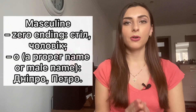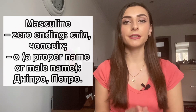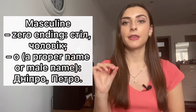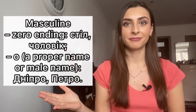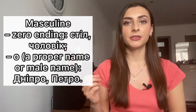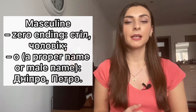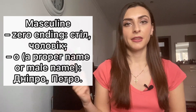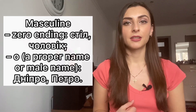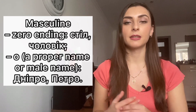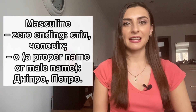Let's talk about the masculine gender. All nouns that have a zero ending — meaning the word ends in a consonant — belong to the masculine gender. For example, 'стіл' (a table): you can see 'стіл' has a zero ending, the final letter is a consonant, so it belongs to the masculine gender. Another example is 'чоловік' (a man) — that word also has a zero ending and belongs to the masculine gender.